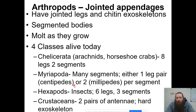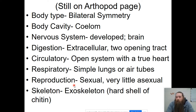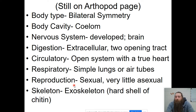They have bilateral symmetry, so we expect cephalization. They are coelomates, so they do have a body cavity. They have developed brains and nervous systems. They have the two-opening digestive tract. They have true hearts, and these are the first ones that are not going to breathe by diffusion — they have simple lungs or air tubes to get oxygen through their body. Very little asexual reproduction is found; primarily they reproduce sexually. The skeleton is made of chitin and it's an exoskeleton that they have to molt as they grow.